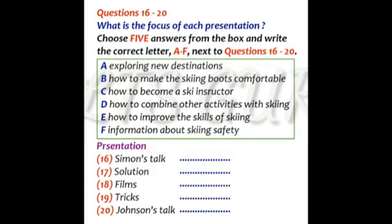Jason Smith will be the last presenter, mainly addressing towards advanced skiers. He manages to apply snow climbing into skiing. Climbing in soft snow, you are floundering around. Walking becomes harder, so a good trick during climbing is to maintain a wider gait, approximately shoulder width, so that you are more stable while walking. This works for skiing as well. That is the end of part two. You now have half a minute to check your answers.